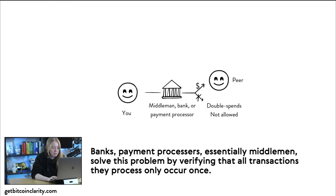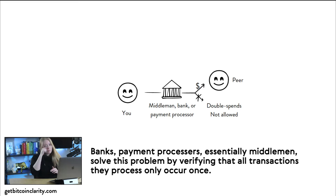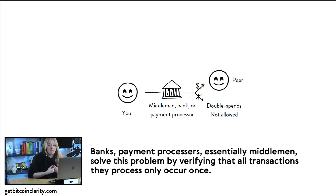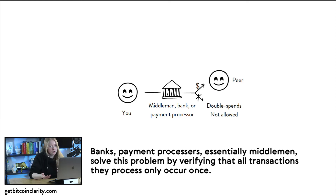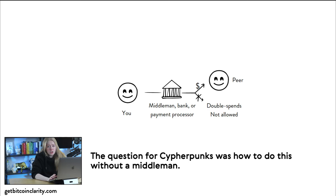Banks, payment processors, and financial middlemen solved this problem by verifying that all transactions they process only occur once. They sit in between you and I whenever we make transactions on the internet and make sure the transaction only happens once. The real question for cypherpunks was how to do this without a middleman.